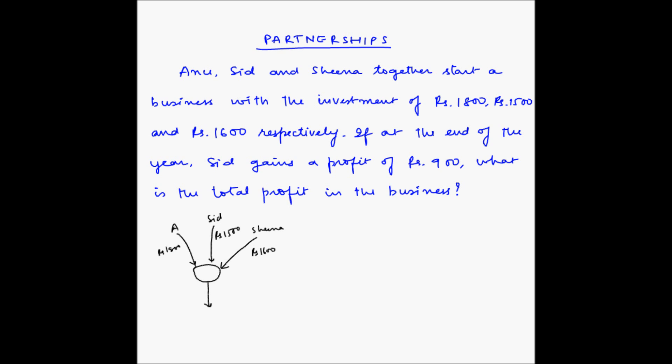So at the end of one year, there is some amount of profit and this profit now has to be shared between the three people who have invested their money in this business. So the share for each of these investors has to be in the proportion of their investments.